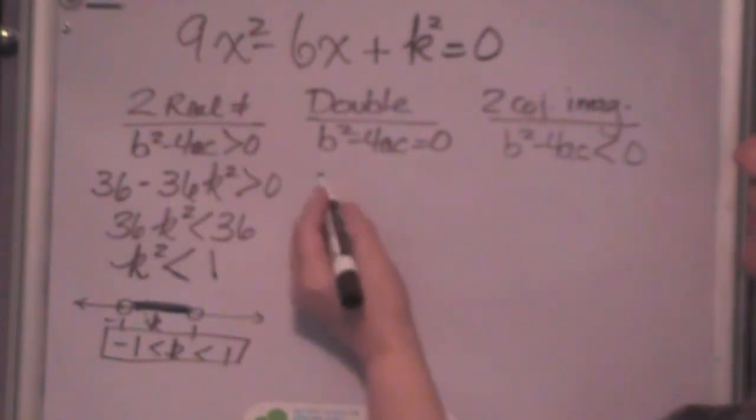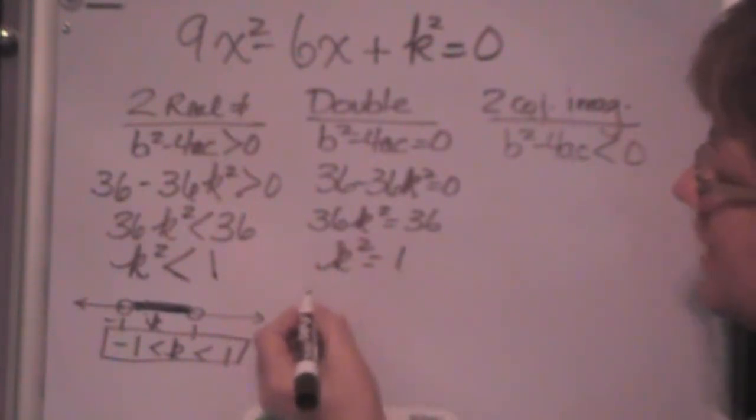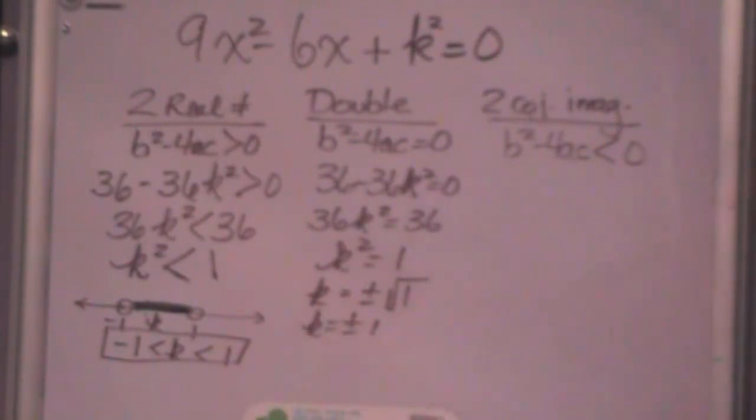Now for 36 minus 36k squared equal to 0, what you're going to get here is 36k squared is equal to 36, and k squared is equal to 1. Well, that means if k is equal to 1, then k squared is equal to 1. Take the square root of both sides. k is equal to plus or minus 1, square root of 1, which is 1. So it's plus or minus 1 in this case. So you have two double roots there.